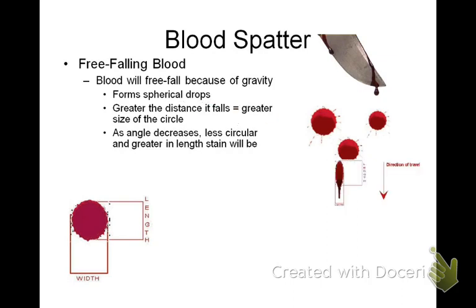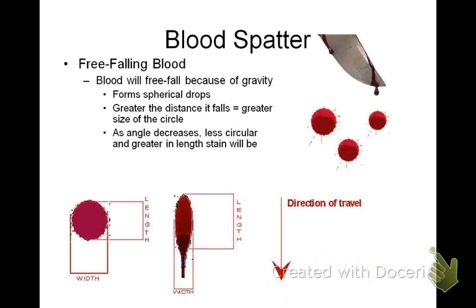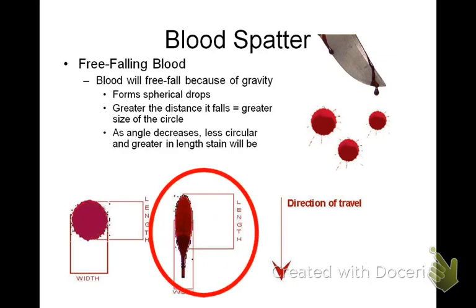The length is pretty much equal to the width. But if you have a blood droplet that falls at an angle of impact less than 90 degrees, you're going to see a more elongated shape — the length is going to be greater than the width. And this is the direction of travel of that blood droplet.